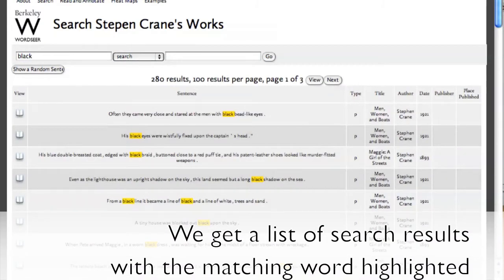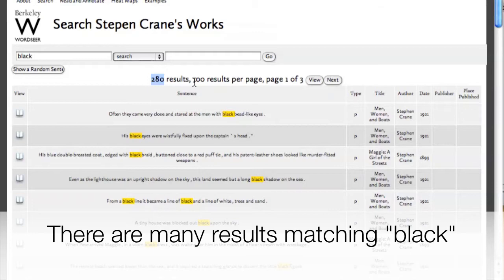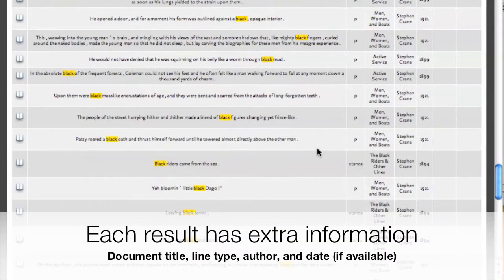I get a list of search results in which black, the word that I typed in, is highlighted. I see how many results there are and how many results I'm being shown per page. I also see additional information, for example, the type of the sentence.